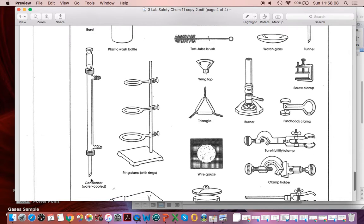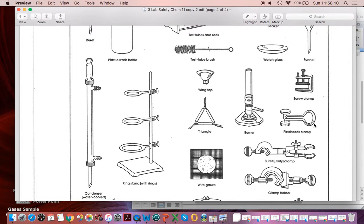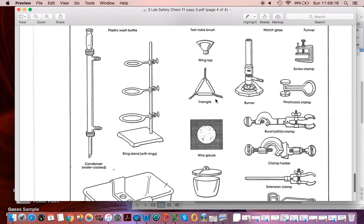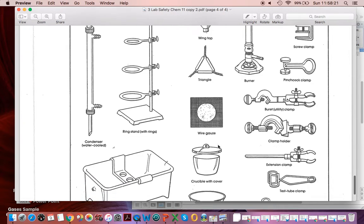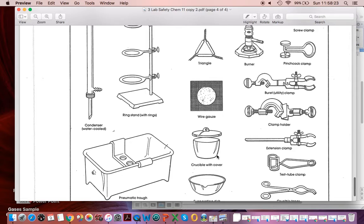Probably won't be using a condenser. And these kind of clamps, we don't use that often in Chemistry 11. We've got lab burners. And clay triangle, we'll use that for the crucible lab. Wire gauze, we'll use crucibles and a lid.